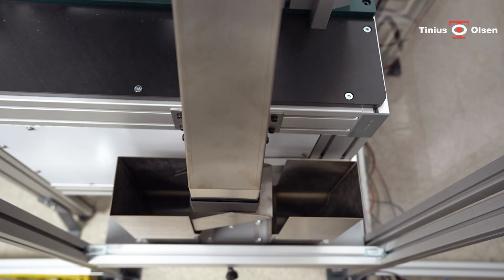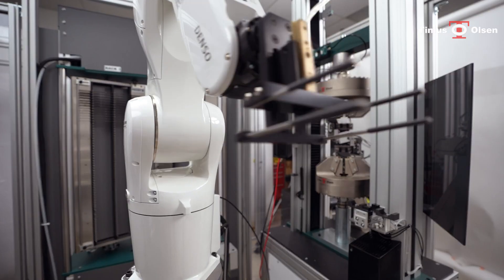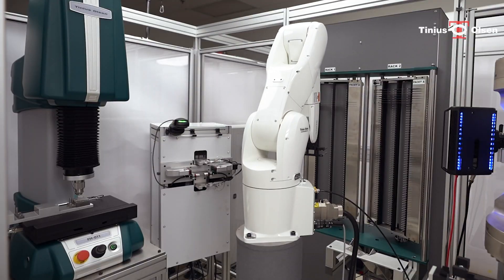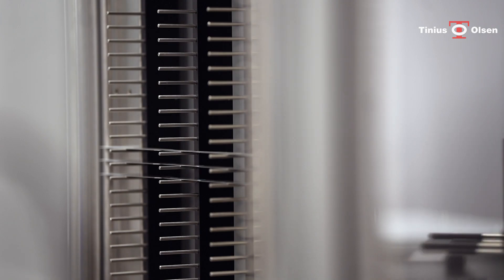You can view the test results on the Horizon software. With these easy-to-follow processes, you can efficiently run endless tests on the automated metal tensile hardness testing system.